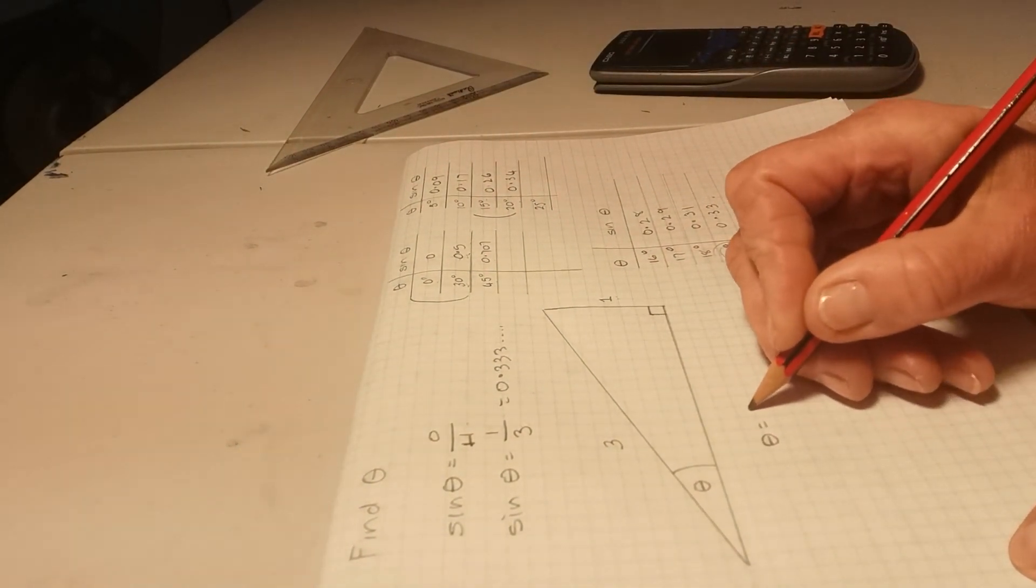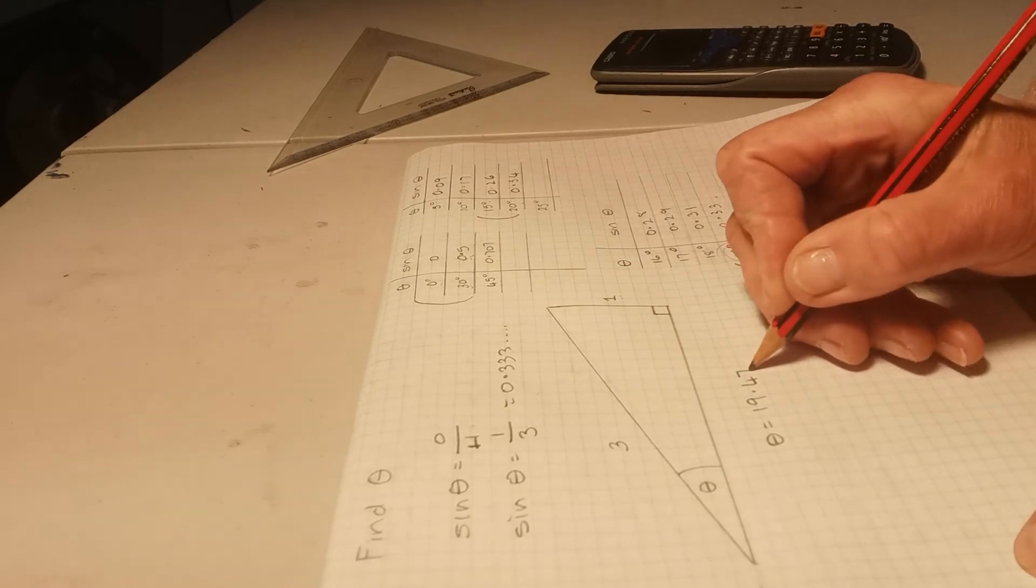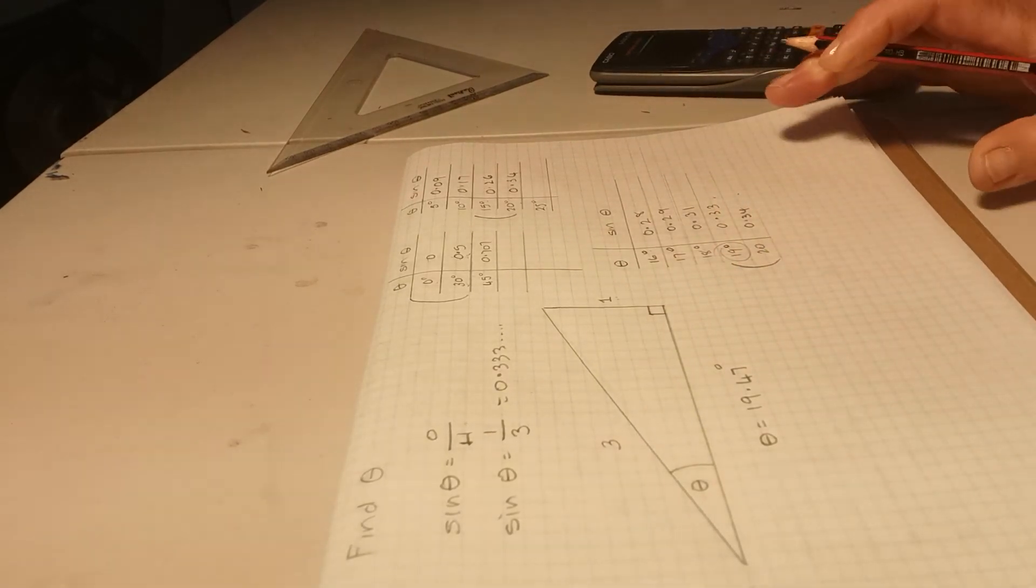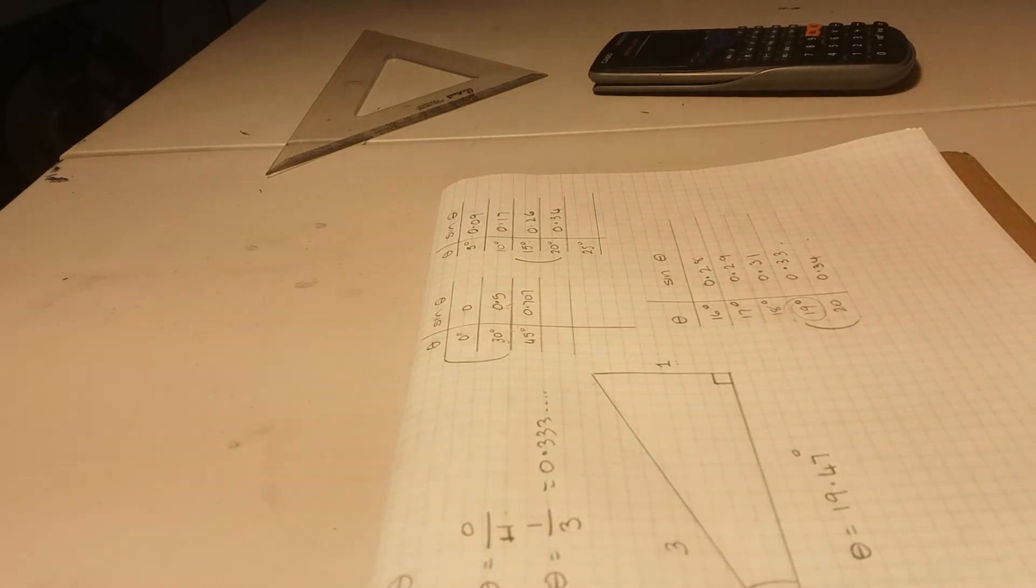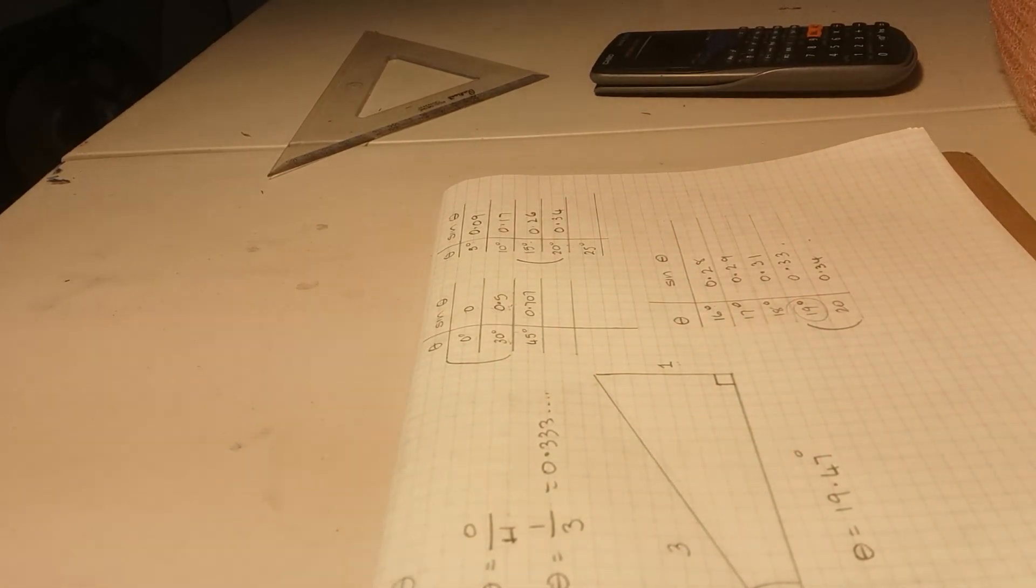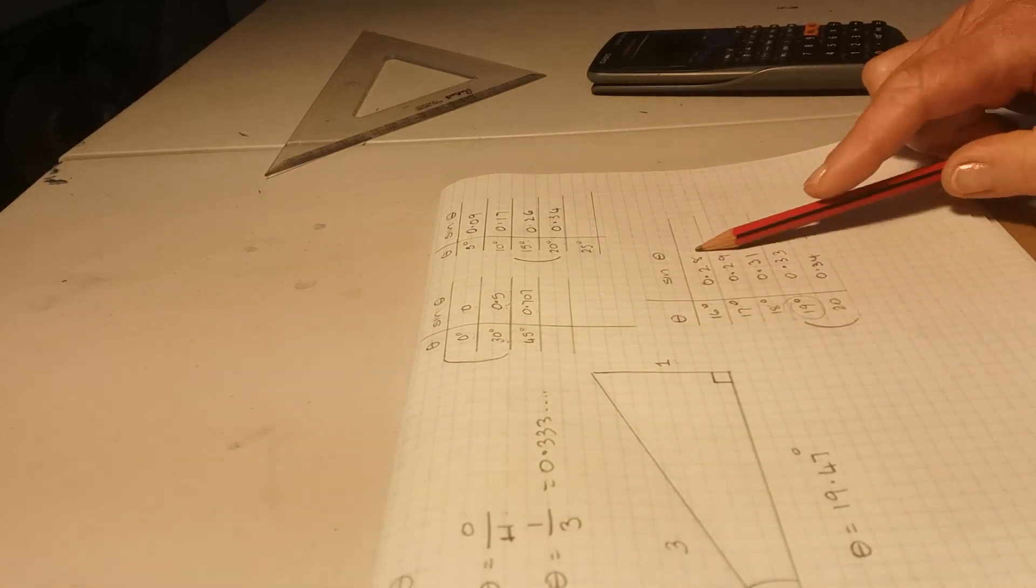Theta is 19.47 degrees, rounded to two decimal places. So it is possible to find the value of theta given two side lengths. In my next video, I'll explore that further. Thanks for listening. Bye.